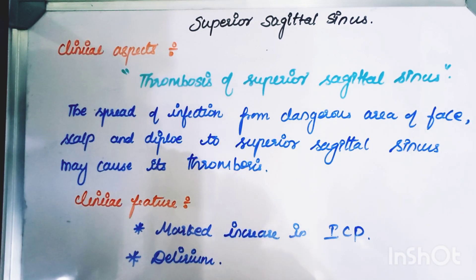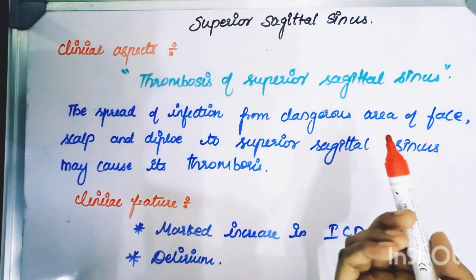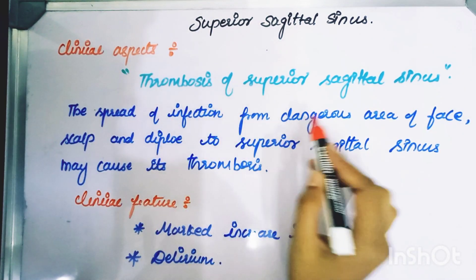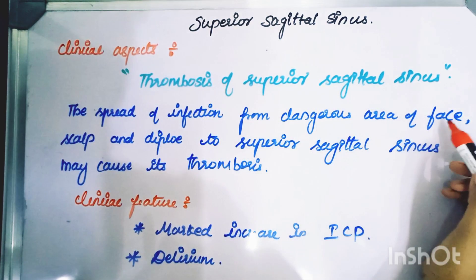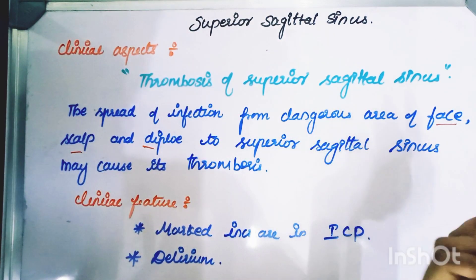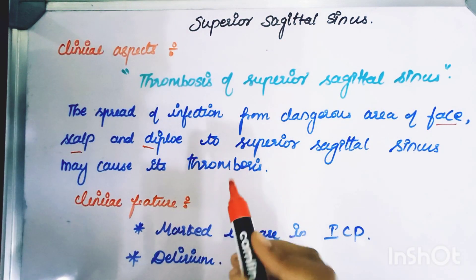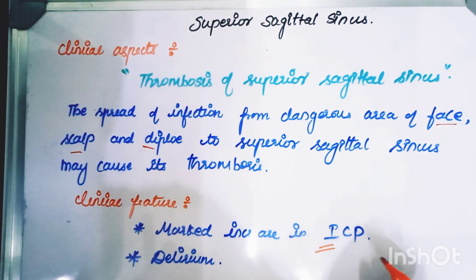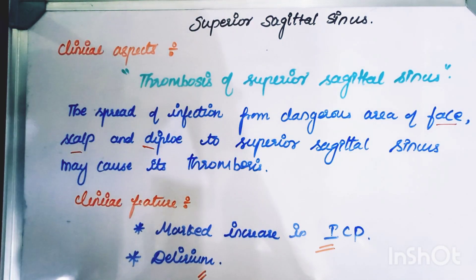The clinical aspect: the most common condition is thrombosis of the superior sagittal sinus. It forms due to the spread of infection from the dangerous area of the face and scalp — through the diploic veins — to the superior sagittal sinus, causing thrombosis. It results in clinical features such as a marked increase in intracranial pressure and delirium.